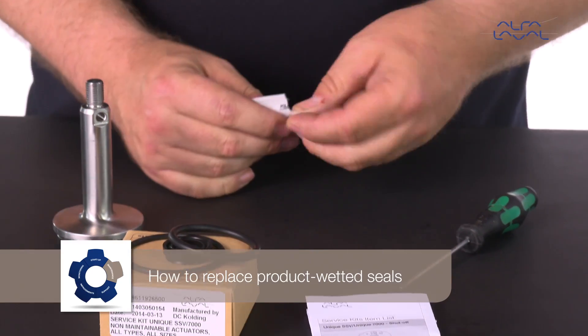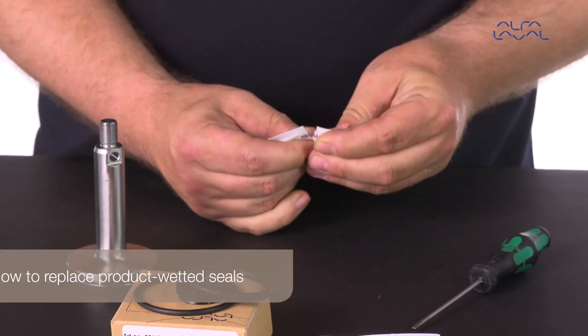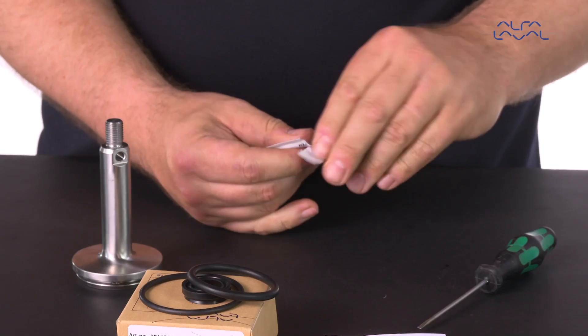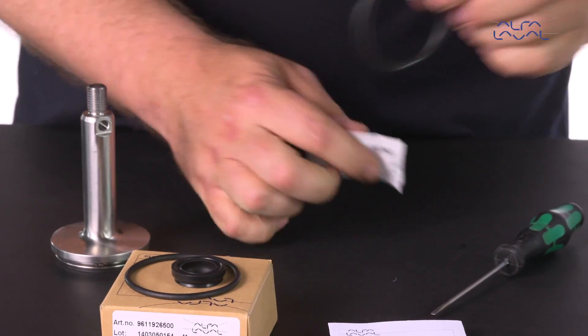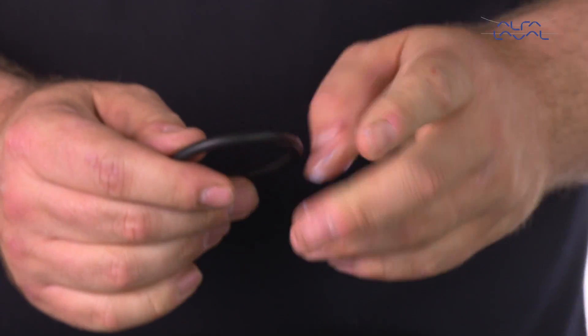How to replace product wetted seals. After dismantling the valve, remove all product wetted seals. We are now ready to replace the product wetted seals.